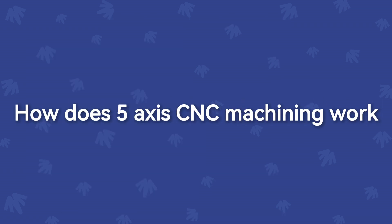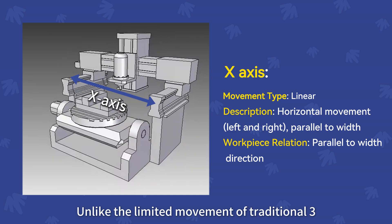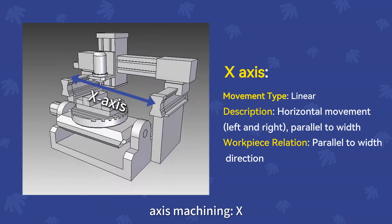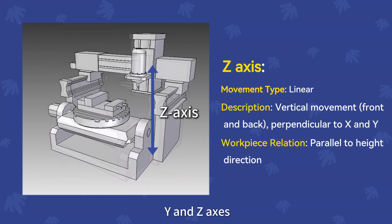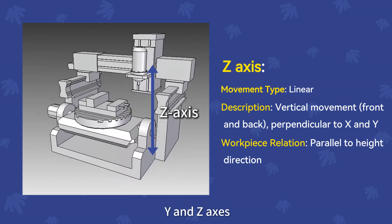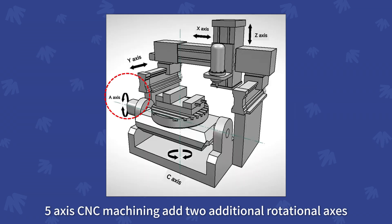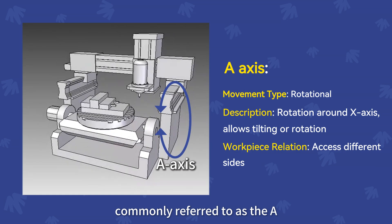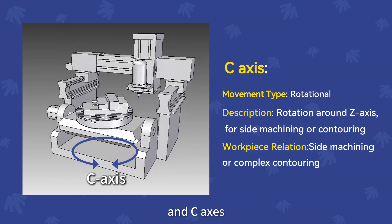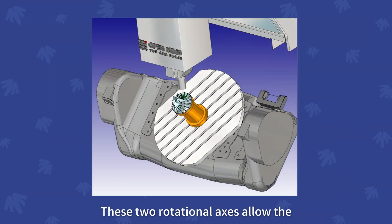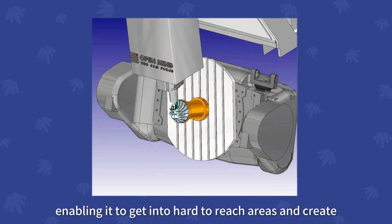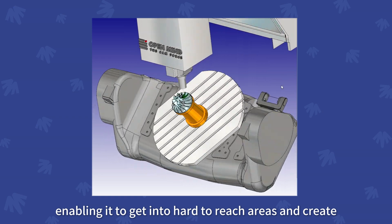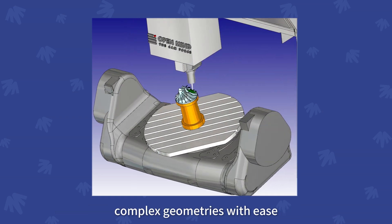How does 5-axis CNC machining work? Unlike the limited movement of traditional three-axis machining — X, Y, and Z axes — 5-axis CNC machining adds two additional rotational axes, commonly referred to as the A and B axes. These two rotational axes allow the cutting tool to approach the work piece from multiple angles, enabling it to get into hard-to-reach areas and create complex geometries with ease.